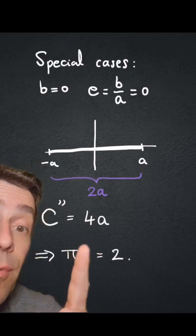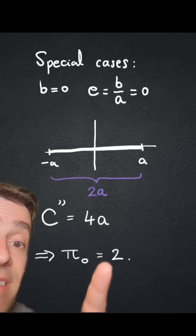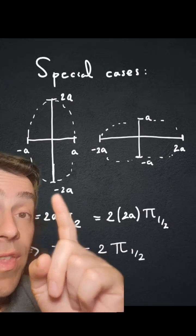And therefore, in this case, pi sub 0 equals 2, since it's 2a times 2. So pi sub 0 is 2. Now, this is something really interesting.